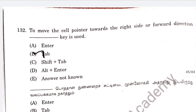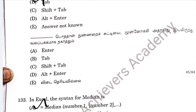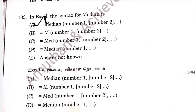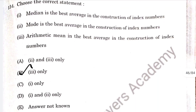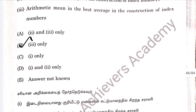Question 132: to move the cell pointer towards the right side or forward direction, the Tab key is used. Option B is correct. Question 133: in Excel, the syntax of median is option A — equal to MEDIAN(number1, number2). Question 134, option B — arithmetic mean is the best average in the construction of index numbers.